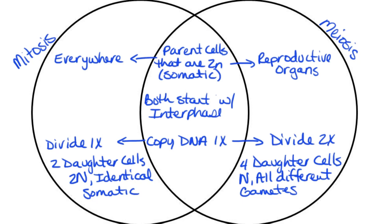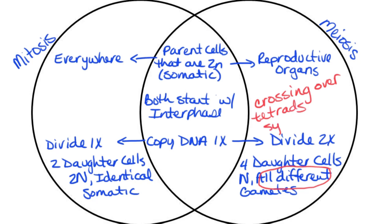There are some other unique things we could talk about with regards to meiosis. There are going to be processes like crossing over, tetrads, and synapsis — unique things that happen in meiosis that actually contribute to those genetically different daughter cells at the very end.